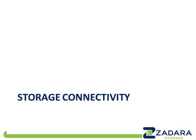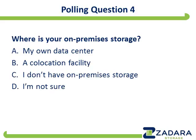Typically, storage and compute are in the same place, providing the best performance, least latency, and most throughput. It is conceivable to have compute on-premises and storage off-premises, and fairly rare to go the other way. This brings me to my last polling question: to the extent that you have on-premises storage, where is it? A, your own data center; B, a co-location facility — a data center where you can rent space and power for your IT equipment, generally very secure with reliable power; C, not relevant, you don't have on-premises storage; or D, you're not sure.